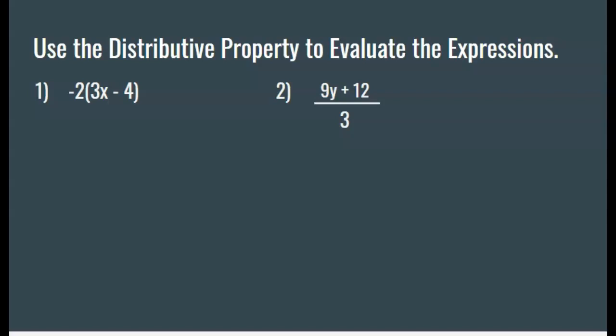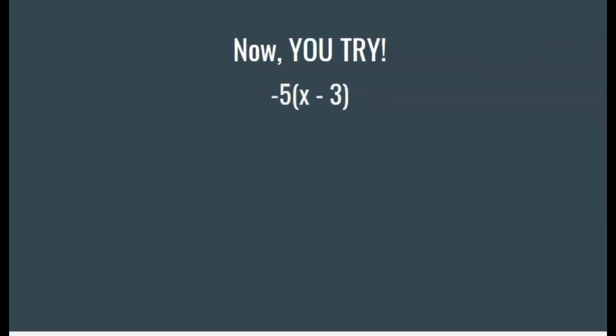Now it says use the distributive property to evaluate the expressions. First, start by distributing negative 2 throughout. When you do that, you get negative 6x plus 8. There's nothing more to do because these are not like terms. I can't simplify them anymore, and I don't know the value of x. This one, I distribute by dividing everything by 3, and I get 3y plus 4 because 9y divided by 3 is 3y, and 12 divided by 3 is 4. Again, I can't simplify any more than that, so I leave it as it is. Please try distributing this and see if your answer is to the right.